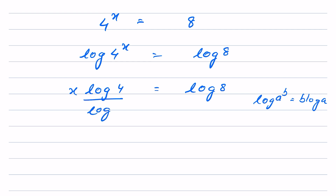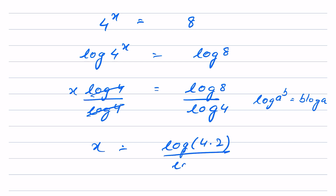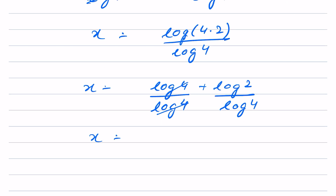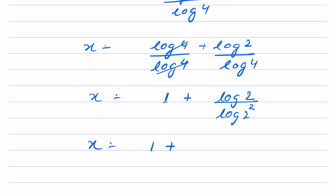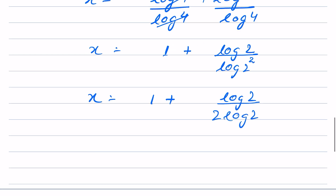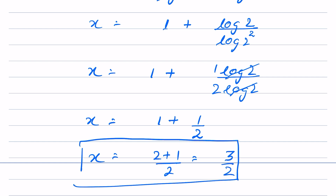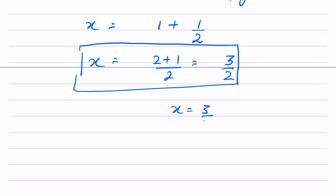Dividing both sides by log 4: x equals log 8 over log 4. Writing log 8 as log(4 times 2) gives log 4 plus log 2, all over log 4. Writing log 4 as log(2^2) = 2·log 2, the log 2 terms cancel, giving x equals 1 plus 1/2, which equals 3/2. Both methods give x equal to 3 upon 2.